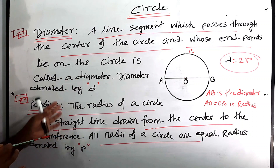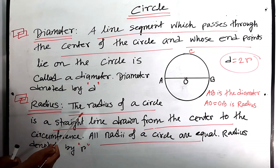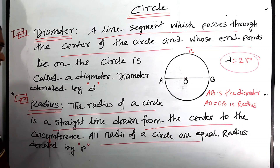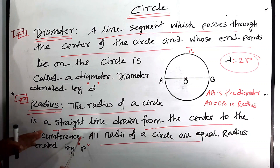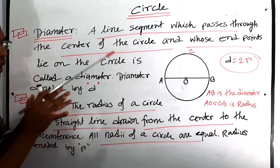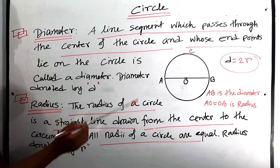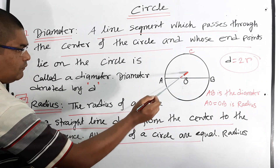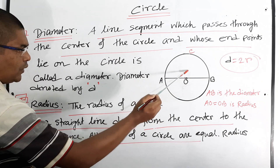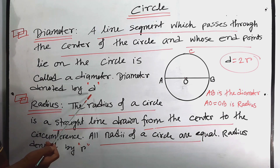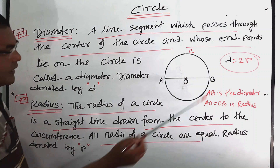The radius of a circle is a straight line drawn from the center to the circumference. All radii of a circle are equal. Here you can see OA equals OB equals OC — if we join O and C, that is also a radius. Diameter is denoted by d, radius by r, and diameter d equals 2r.